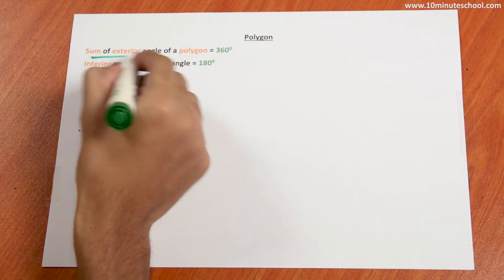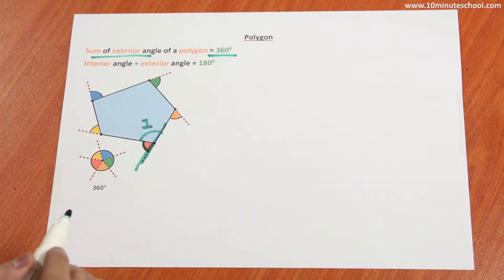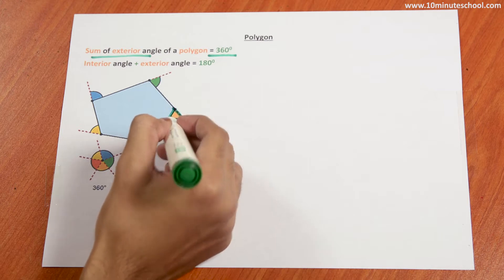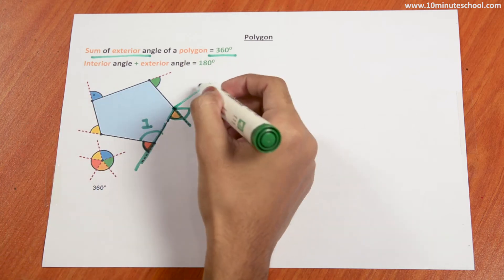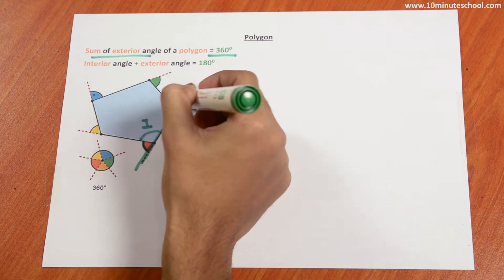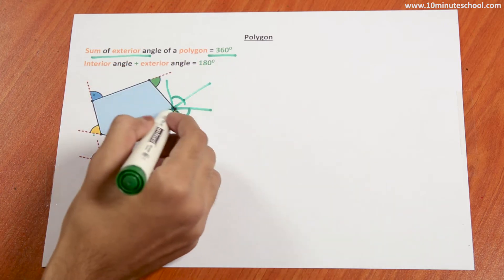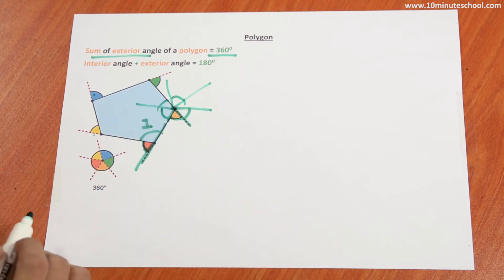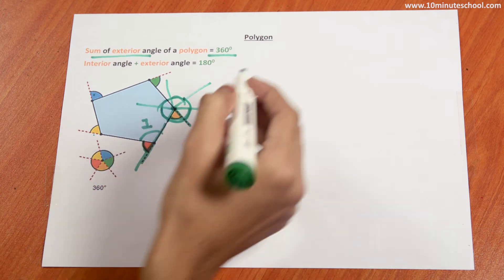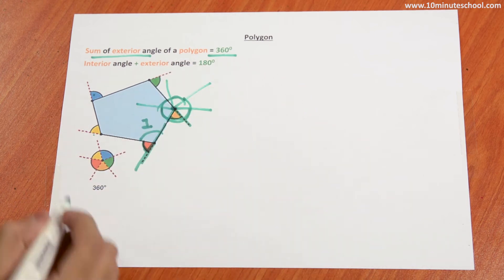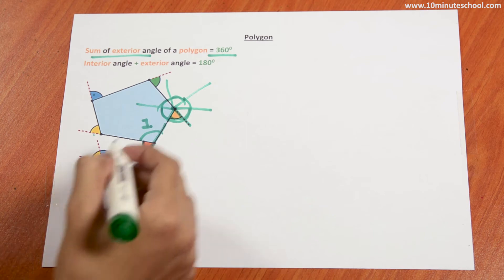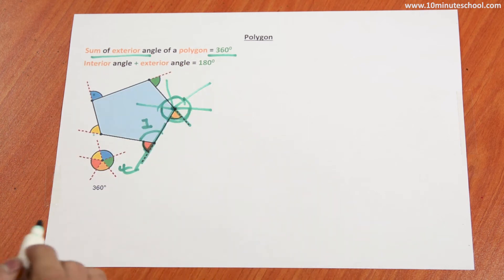This is an important concept: the sum of all exterior angles will give 360 degrees. The exterior angles will form a shape like this. Ultimately, when we add the sum, it will give 360 degrees. Because it forms a circle — the exterior angles of a polygon form a circle. That's why the exterior angle of any polygon will give 360 degrees.